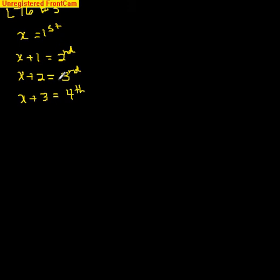Find four consecutive integers such that three times the sum of the first and the third. Well, here's the first and here's the third. So three times the sum, so you need parentheses, of the first and the third is, so that's your equals.